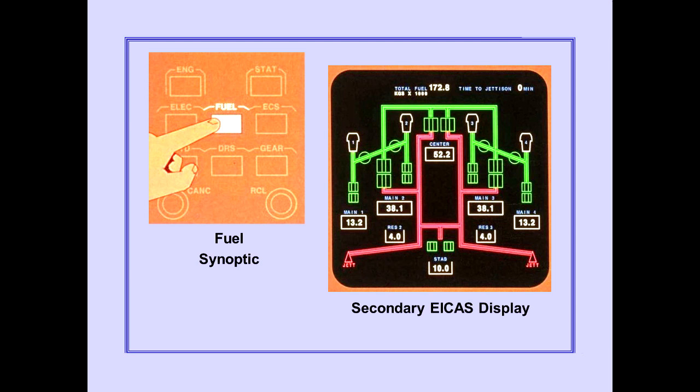Pushing the fuel synoptic switch on the ICAST display select panel displays the fuel synoptic on the secondary ICAST display. The display provides real-time information about the status of various valves, tank quantities, and flows.